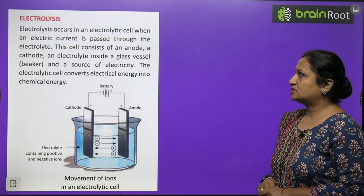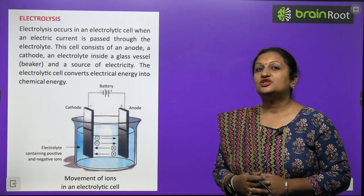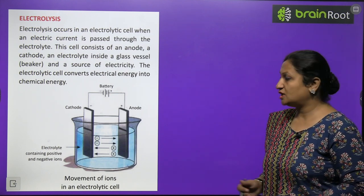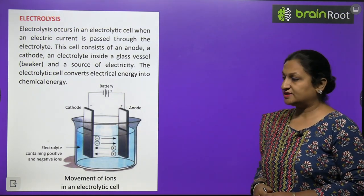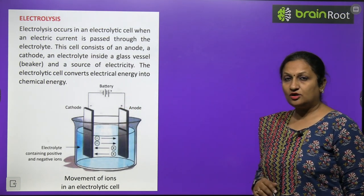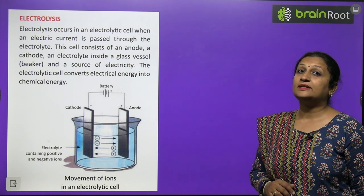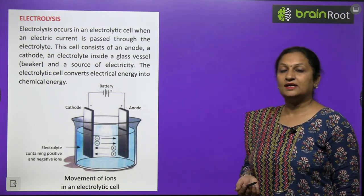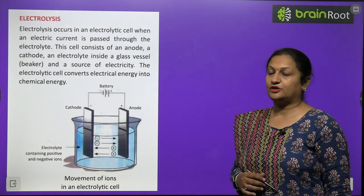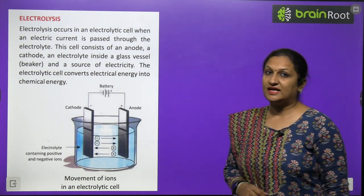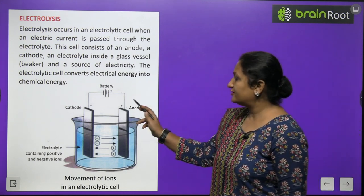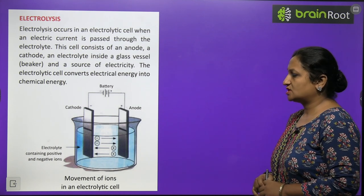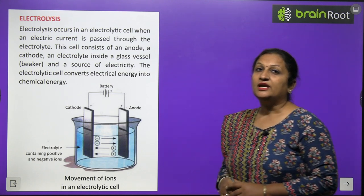Electrolysis: electrolysis is a process in which electric current is passed through an electrolyte to produce a chemical effect. It is carried out in an electrolytic cell containing two electrodes dipped in the electrolyte. The negative electrode is called the cathode — it is connected to the negative terminal of the battery. The positive electrode is called the anode — it is connected to the positive terminal of the battery. The electrolytic cell converts electrical energy into chemical energy.